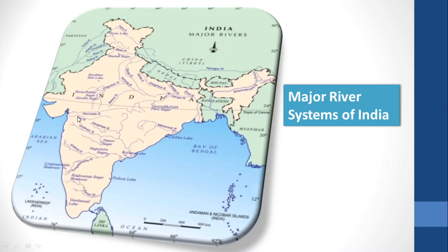Now let's look at the Peninsular rivers. Narmada and Tapi — the Narmada originates from the central highlands, flows westward, and falls into the Arabian Sea. Tapi also originates from the eastern side, flows westward, and falls into the Arabian Sea.